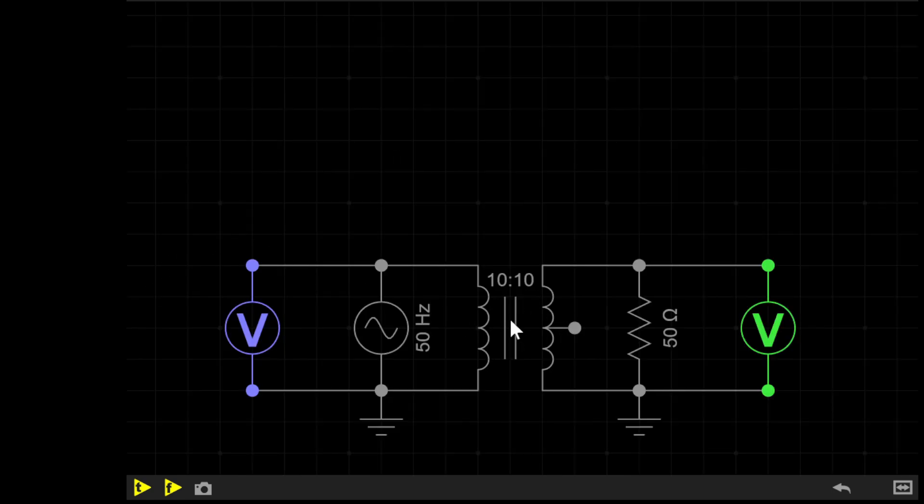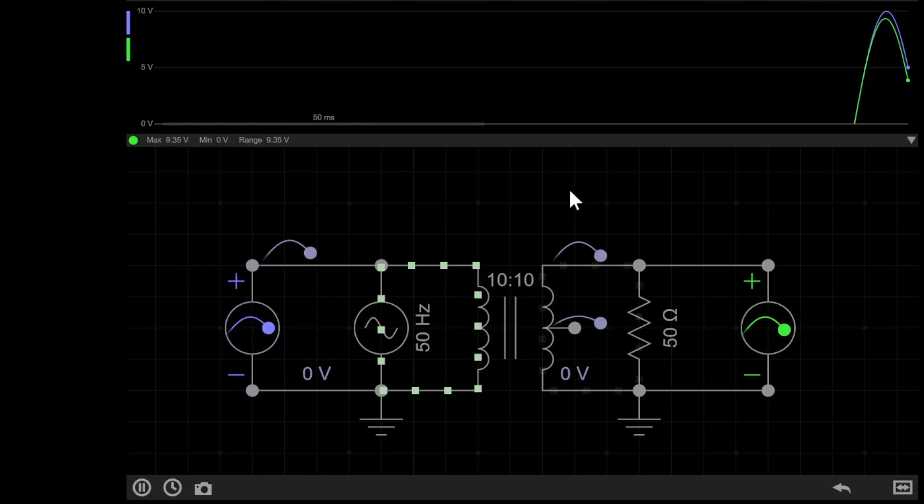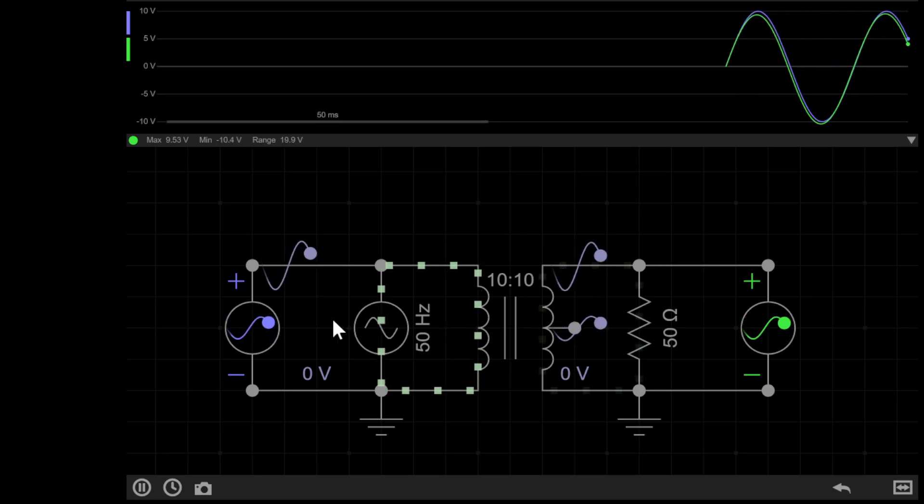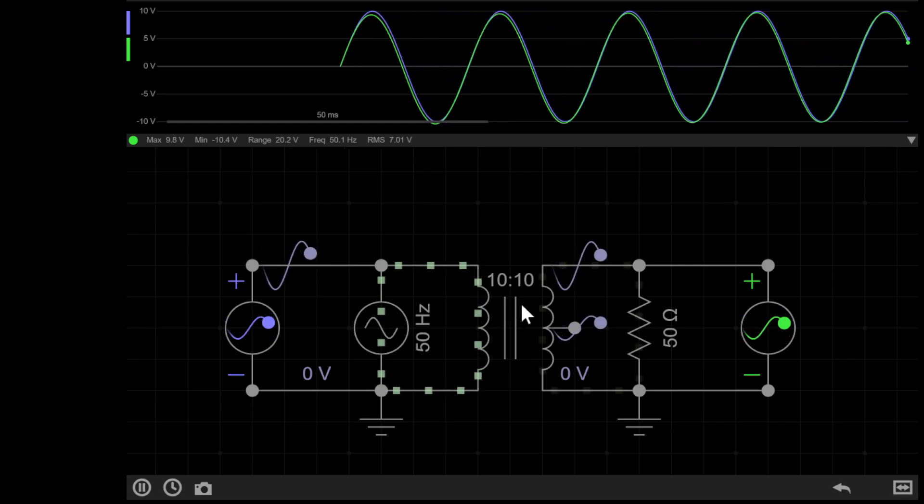In this circuit I have a center tapped transformer with a 1 volt AC supply on the primary and a load on the secondary. But I'm not using it like a center tapped transformer because I'm just connecting straight through here and ignoring the center tap. So if I simulate the circuit you'll see that the signal going in, the blue, and the signal going out the green are pretty much the same because the transformer is acting like a 1 turns ratio transformer at the moment, so what comes in comes out.